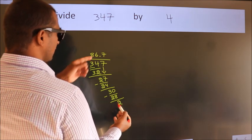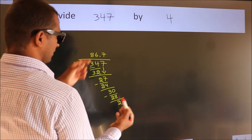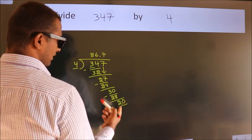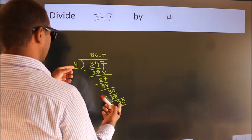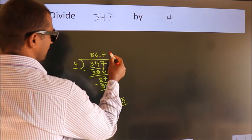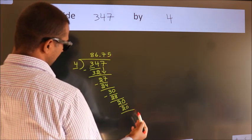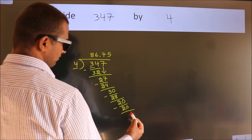After this, we already have the decimal, so directly take 0. So, 20. When do we get 20 in the 4 table? 4 times 5 is 20. Now we subtract and get 0.